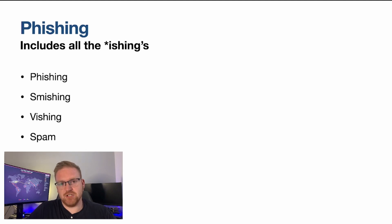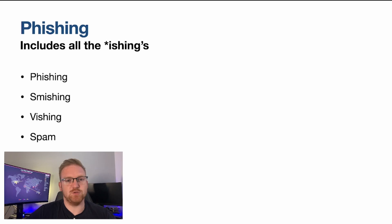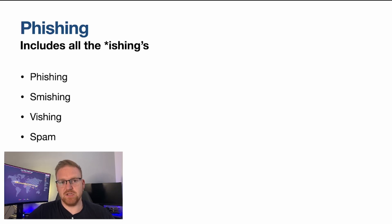Now let's talk about phishing — and this includes all the related variants, because there are so many different ways that attackers can manipulate this general scheme of sending some kind of unwanted message that might have an attachment, a link, or a call to action — whether subtle or overt — telling the target to respond back. Phishing is whenever an attacker sends an email that can include an attachment or a malicious link that contains malware or sends the target to a site that can give them malware.